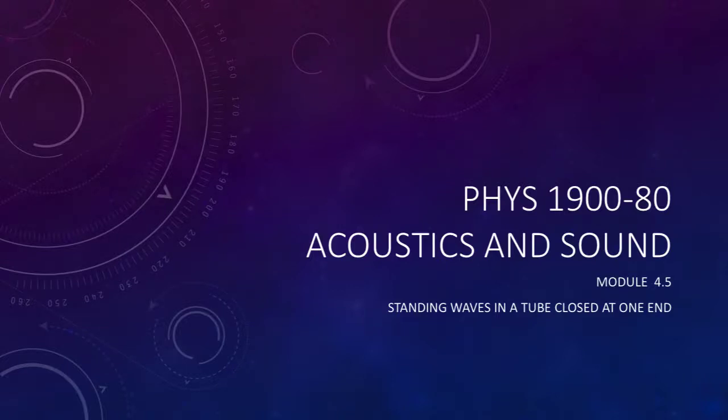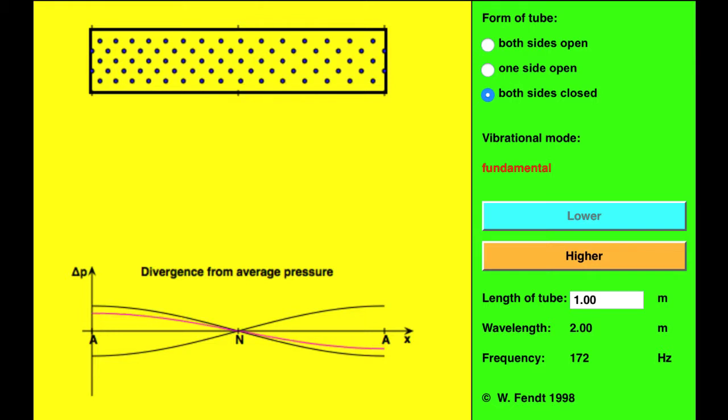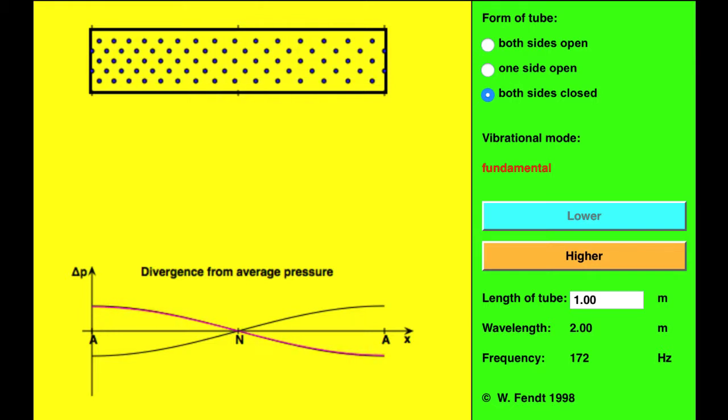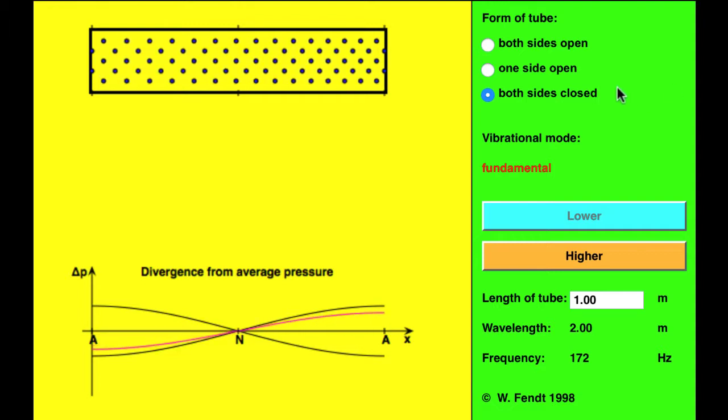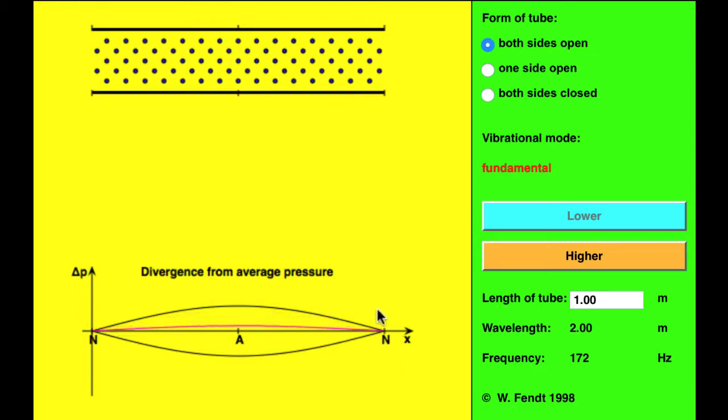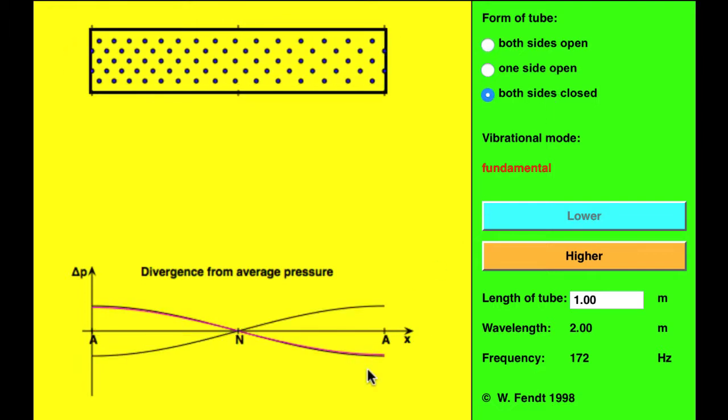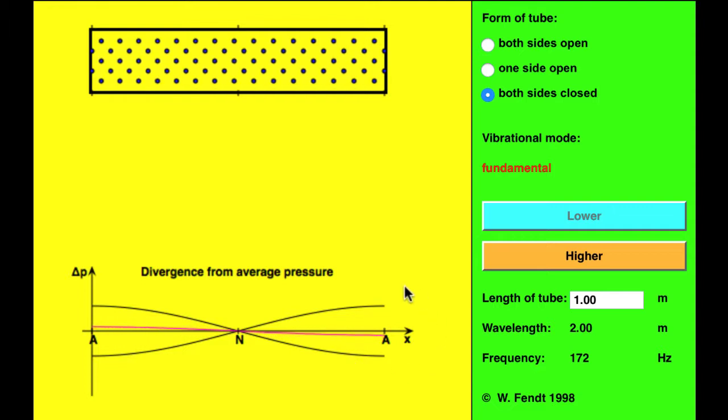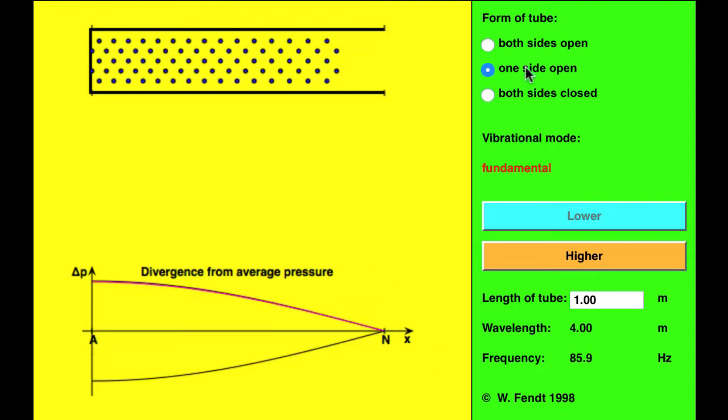Module 4.5, standing waves in a tube closed at one end. We have looked at a tube open at both ends and a tube closed at both ends. We know that a tube open at both ends have nodes on either side. A tube that has both ends closed have antinodes on each side.